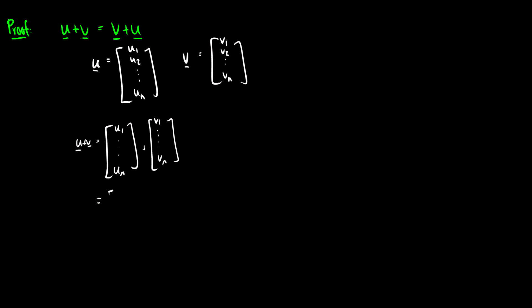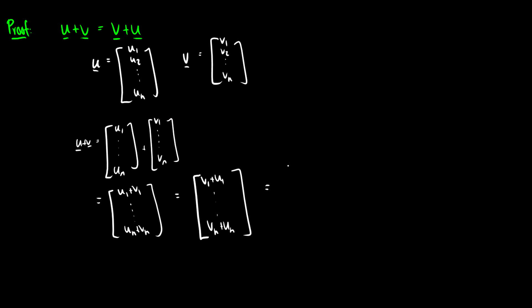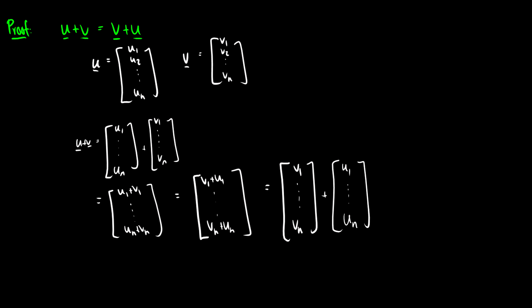We know how to add these entries together, so we take u1 plus v1, all the way down to un plus vn. We can switch the order of this thanks to the properties of real numbers — we can say this is v1 plus u1, all the way down to vn plus un. That means we can break it back apart: v1 all the way down to vn, plus u1 all the way down to un, which is just v plus u.